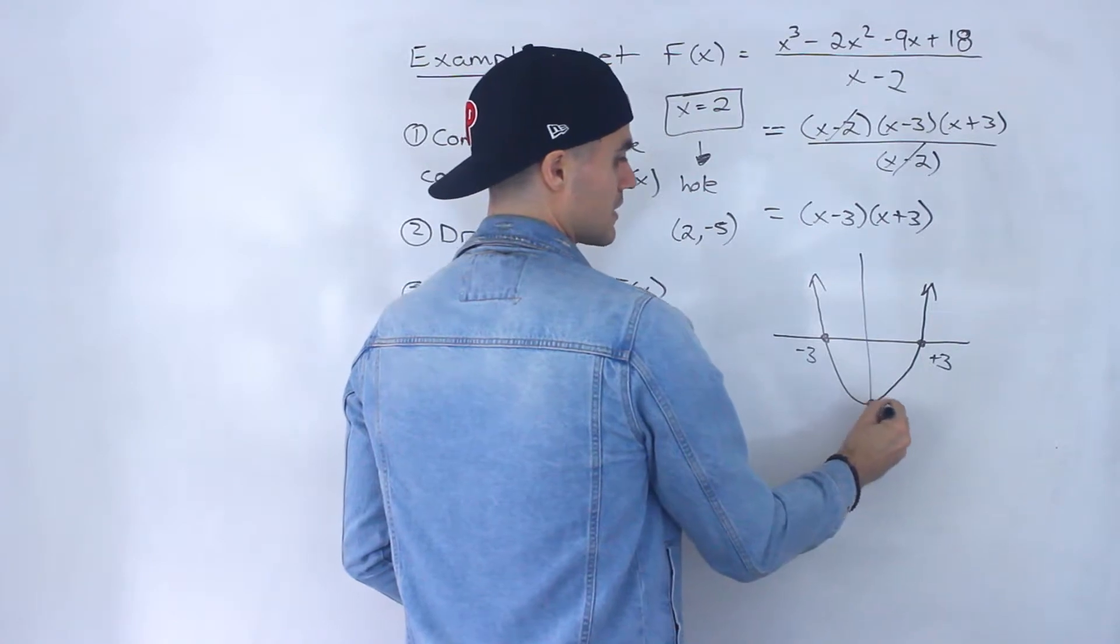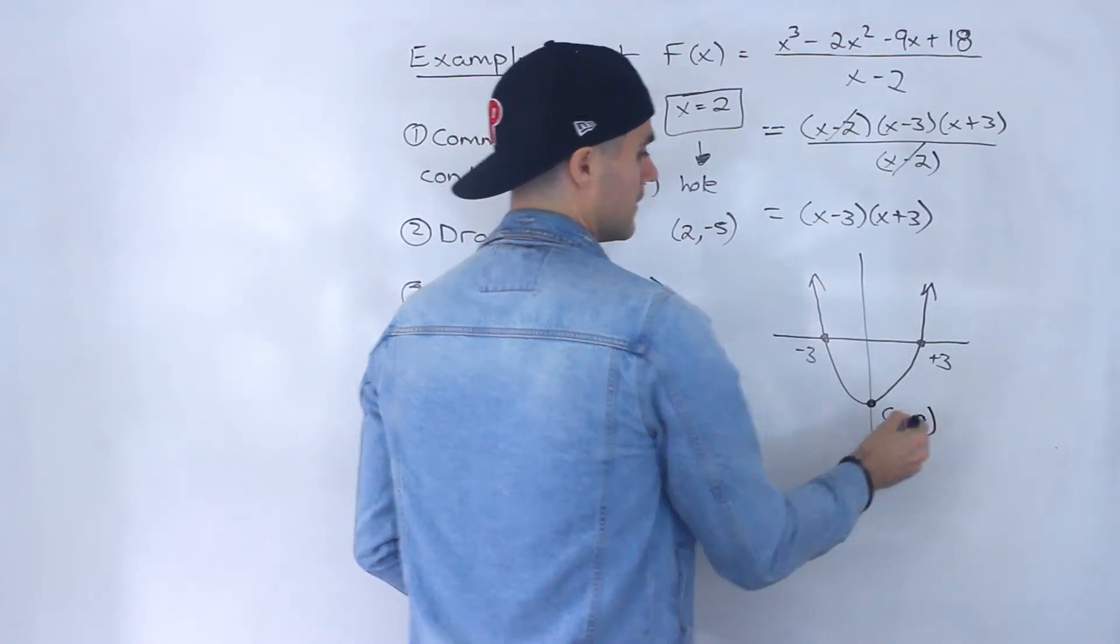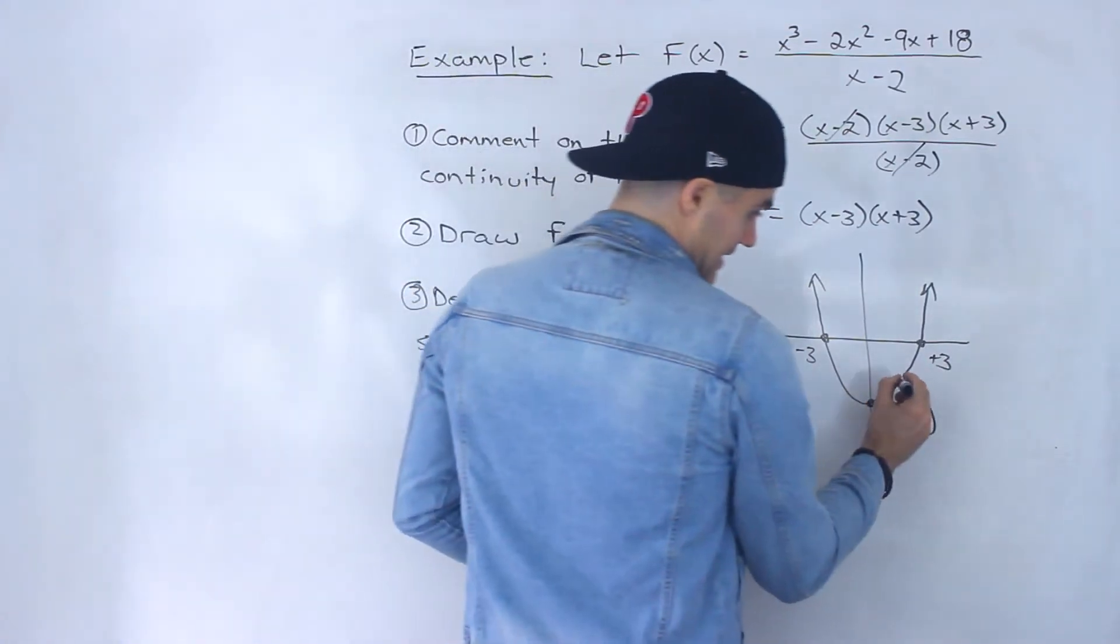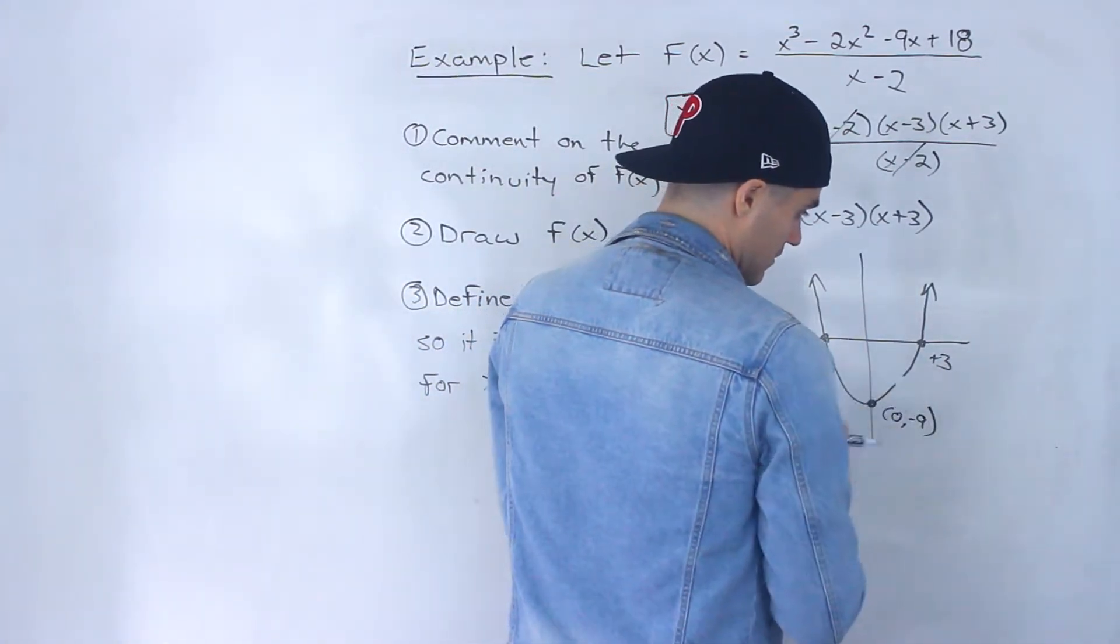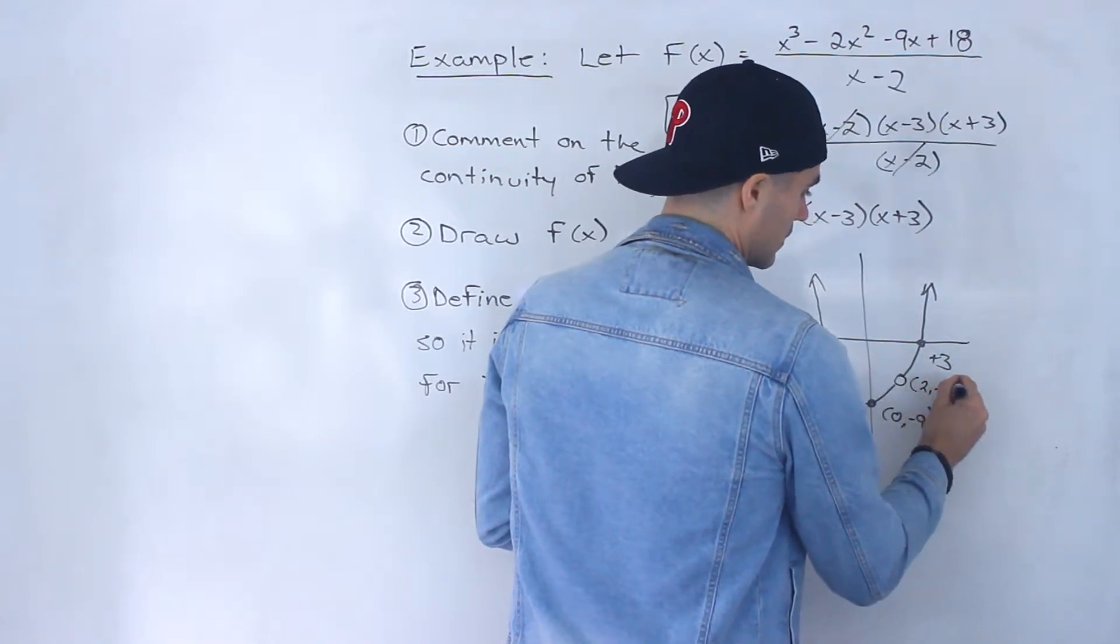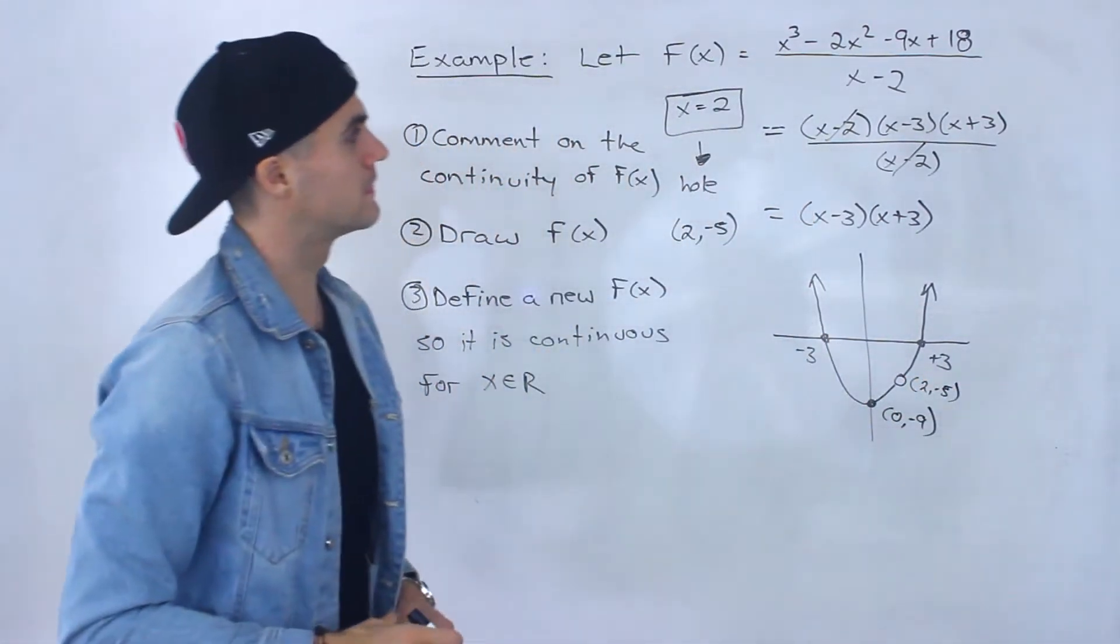And then its vertex is here at 0, negative 9. But at the point 2 and negative 5, which let's say that's like over here, there would be a hole.